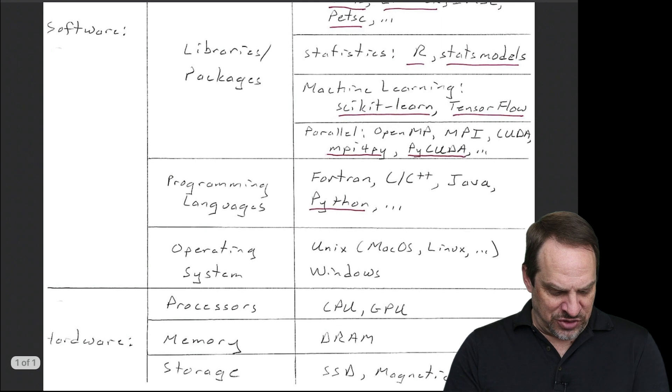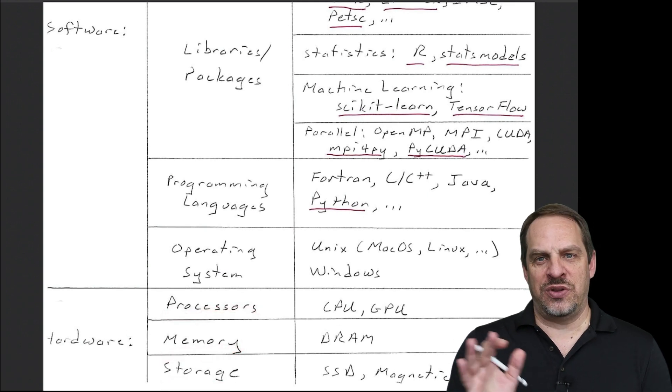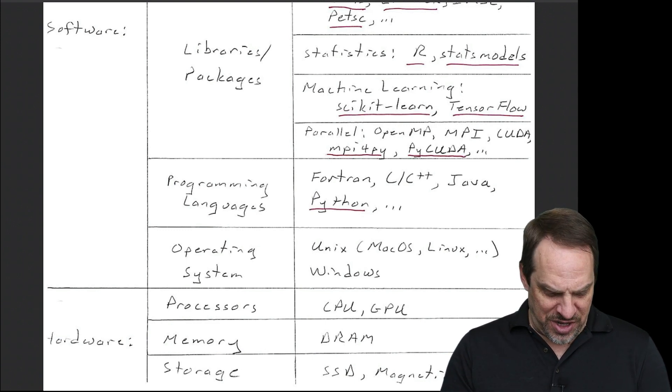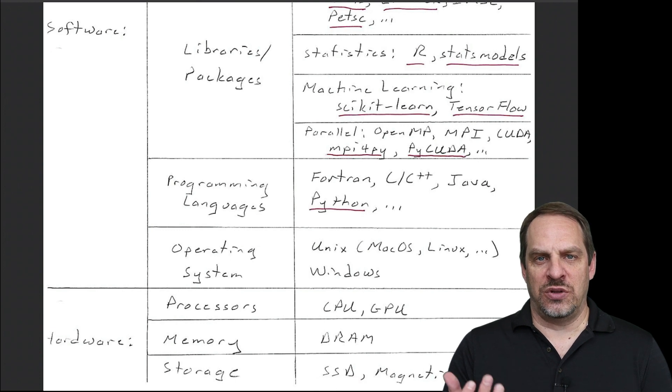So you start at the bottom and that's your hardware. So that's processors, memory, and storage. Now there's other things that are included in the computer, but in the scientific computing sense, these are the three main things we care about. So there's the CPUs and the GPUs, there's the DRAM for the memory, and there's now the SSD, which is the permanent long-term storage.